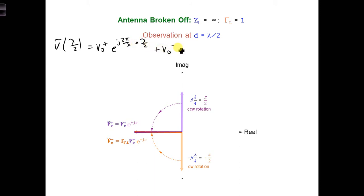plus v naught minus e to the minus j 2 pi over lambda times lambda over 2. So that is a lambda. Simplifying, we get v naught plus e to the j pi plus the voltage reflection coefficient times v naught plus e to the minus j pi.